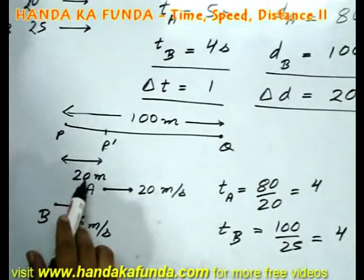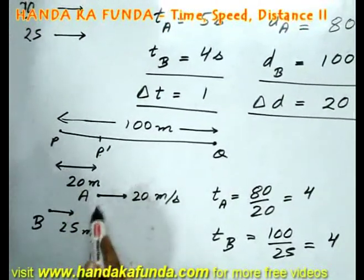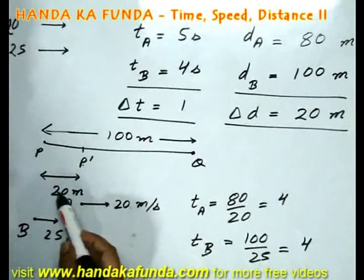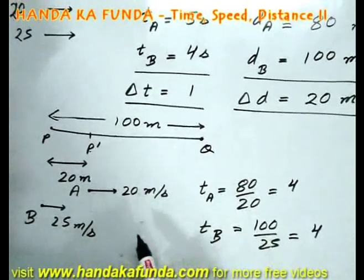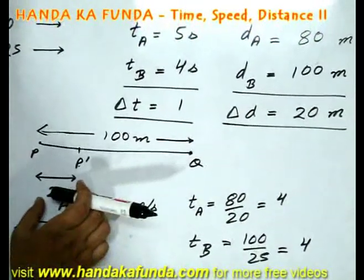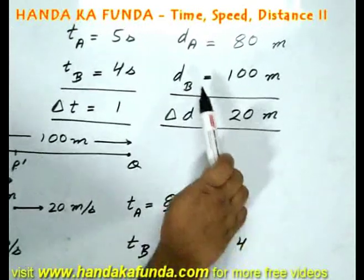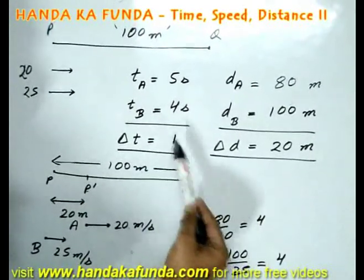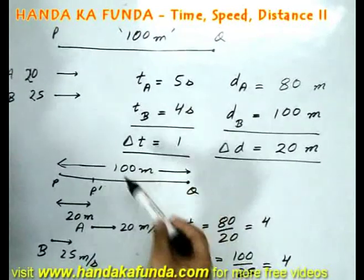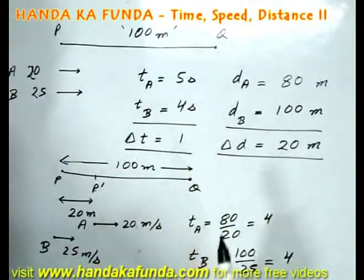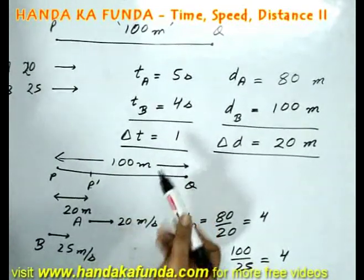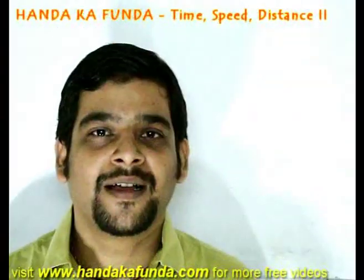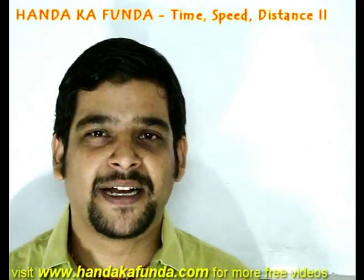If the start given was less than 20 meters, say 15 or even 19.99 meters, then B would have won. Since the start was exactly 20 meters, it was a dead heat. If the start given was more than 20 meters, then A would have won. Similarly in terms of time: if the time start given is more than 1 second, A wins; if less than 1 second, B wins; if exactly 1 second, the race finishes in a dead heat. Please stay with us to continue the discussion on Time, Speed and Distance. Thank you.